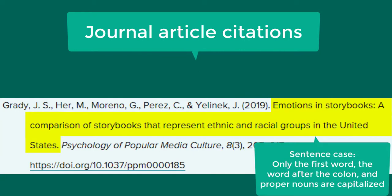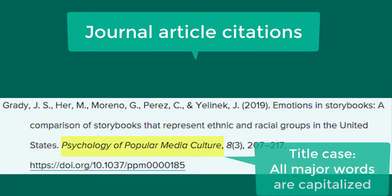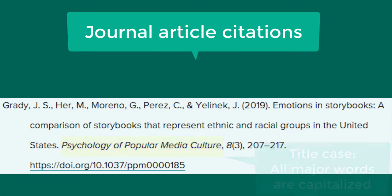Then comes the title of the article in sentence case. The title of the journal, italicized in title case, followed by a comma. The volume number, still in italics, then in parentheses and non-italics is the issue number, comma, and the page range, period. If the article has a DOI, it should be listed as a hyperlink that begins with https colon and two forward slashes.